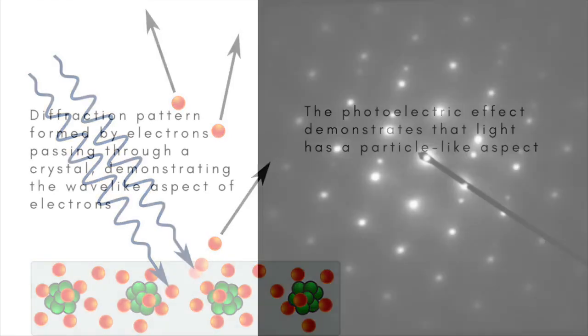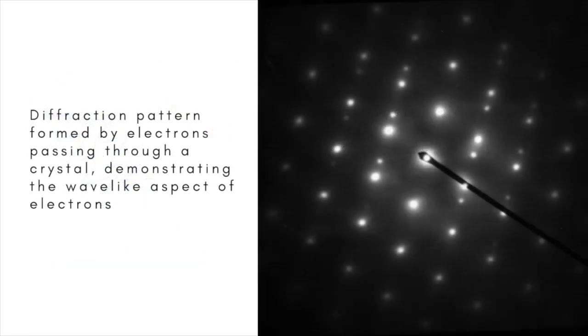Electrons, on the other hand, which normally behave like particles, can be made to diffract and interfere, as if they consisted of waves.